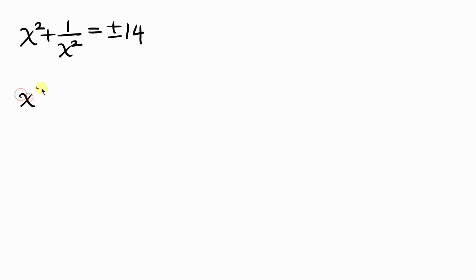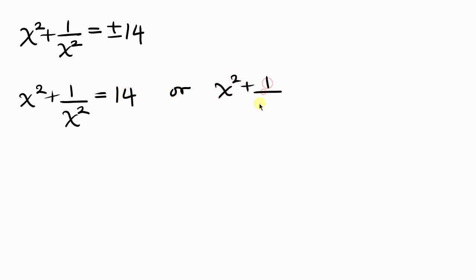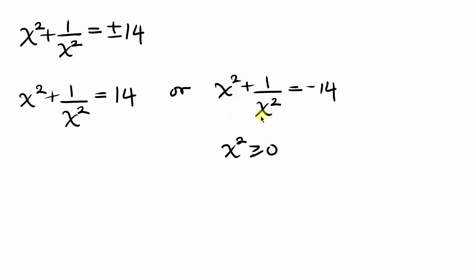Now let's separate the values. We have x squared plus 1 over x squared equal to 14, or equal to negative 14. Since terms with a power of 2 are always positive, the left-hand side is always positive. The right-hand side being negative 14 is unbalanced, so we reject that case.